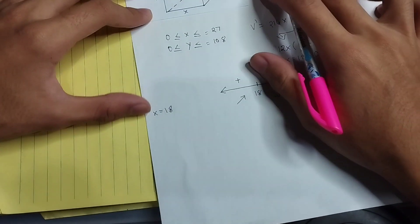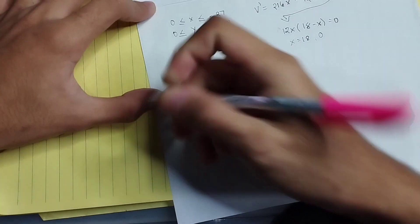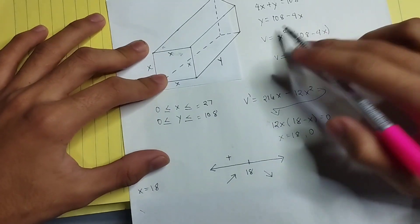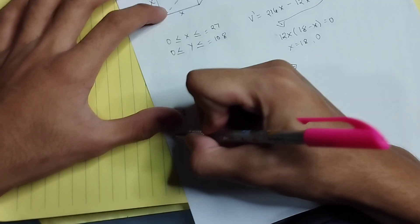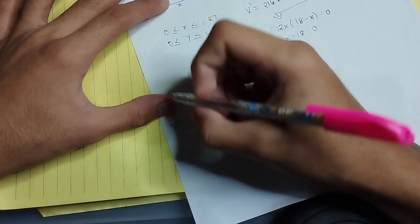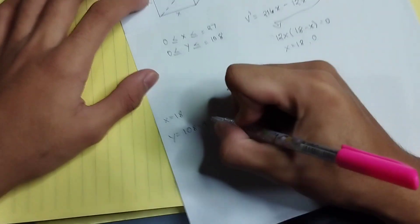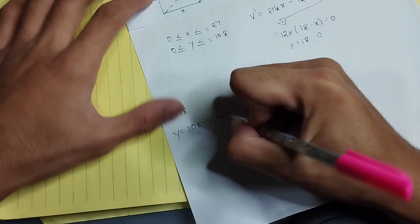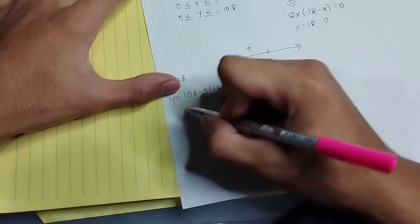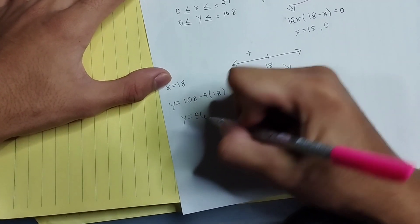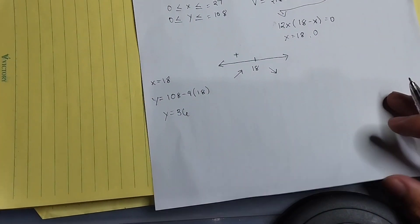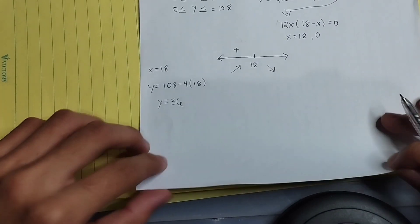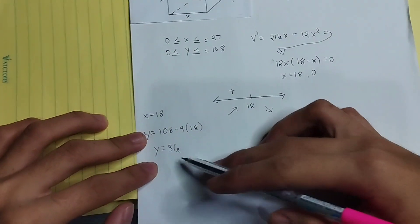y equals 108 minus 4x. So y equals 108 minus 4 times 18, and we get the value of y equals 36.